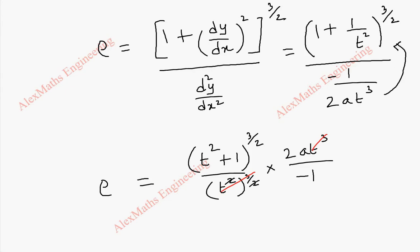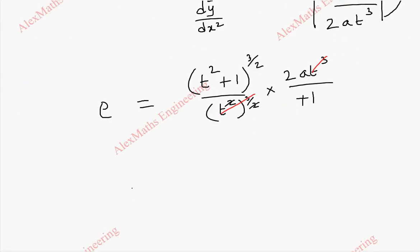And whenever we have a negative term, we take its modulus and make this as plus because radius of curvature cannot be negative. It is a positive quantity.